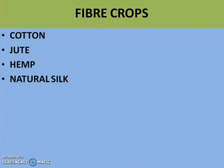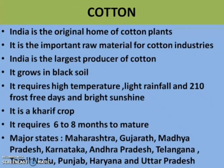The first fiber crop is cotton. India is the original home of cotton plants. It is an important raw material for the cotton textile industry, and India is the largest producer of cotton in the world. Cotton grows in black soil. It requires high temperature, light rainfall, 210 frost-free days and bright sunshine. It is a Kharif crop and requires 6 to 8 months to mature. Major cotton producing states are Maharashtra, Andhra Pradesh, Telangana, Tamil Nadu, Punjab, Haryana and Uttar Pradesh.